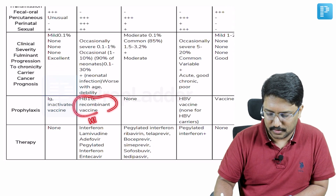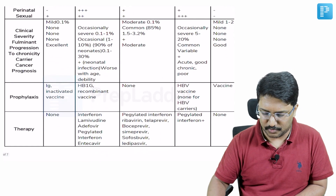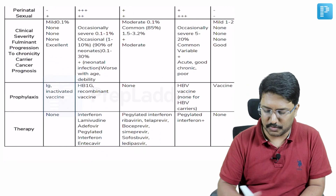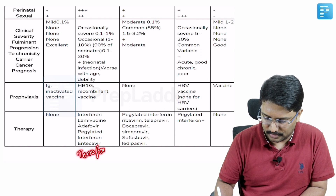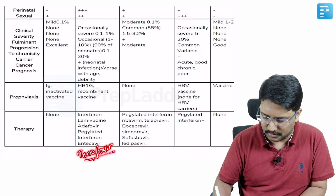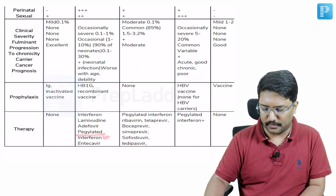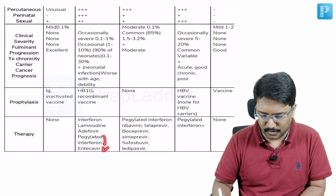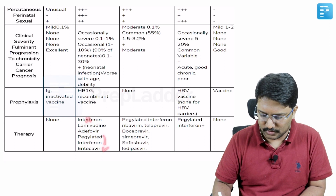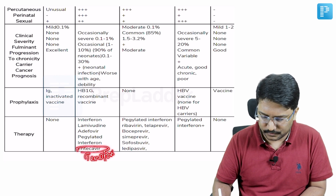We have a vaccine for HBV — basically the surface antigen itself, in a recombinant form like Engerix B. Treatment-wise, we have a long list of drugs, but most commonly we follow either entecavir or, more preferred, tenofovir. Tenofovir is the most important drug offered today for hepatitis B. Pegylated interferon is also available. Lamivudine and adefovir are no longer used.